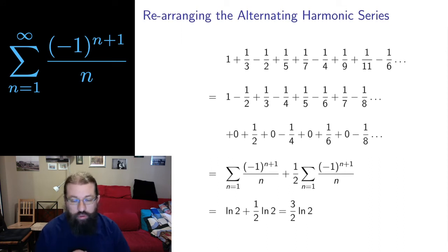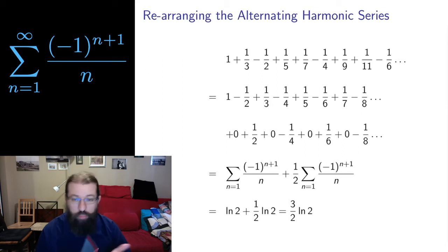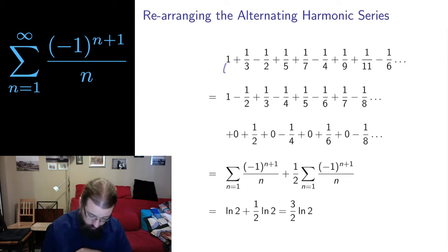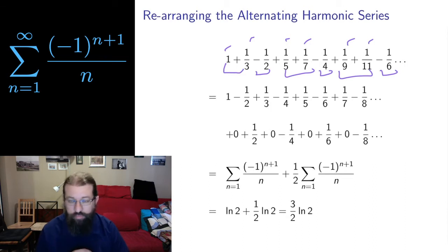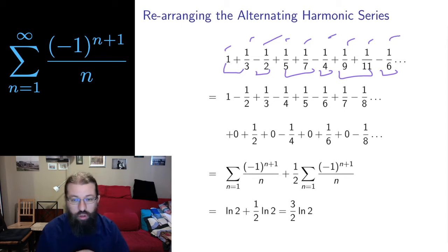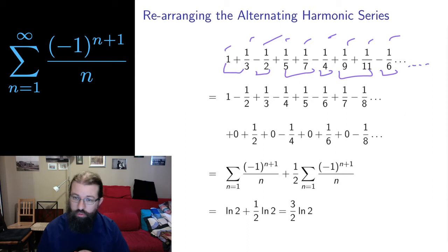Now I want to rearrange the terms of the alternating harmonic series. We had positive terms with odd denominators and negative terms with even denominators. Before we alternated them: 1 - 1/2 + 1/3 - 1/4 + 1/5 - 1/6. Here I'm going to take two positives, then a negative, then two positives, then a negative, and so on. I still have 1, 1/3, 1/5, 1/7, 1/9, 1/11 — all the positive odd-denominator terms — and I still have -1/2, -1/4, -1/6 — all the negative even-denominator terms. Since this goes on infinitely, no numbers are missed. These are the same terms, just rearranged.